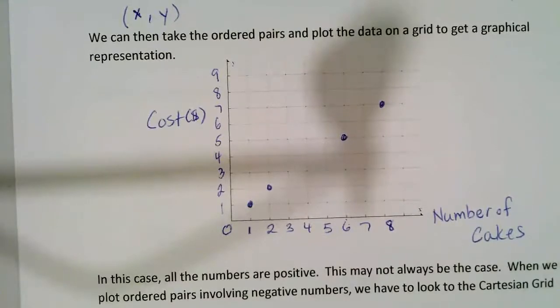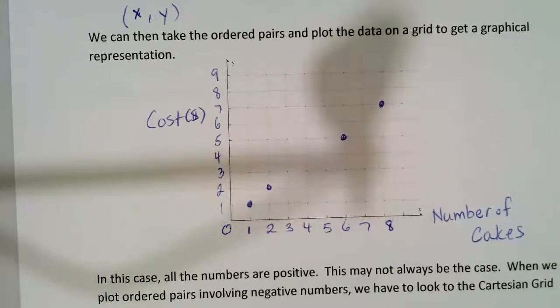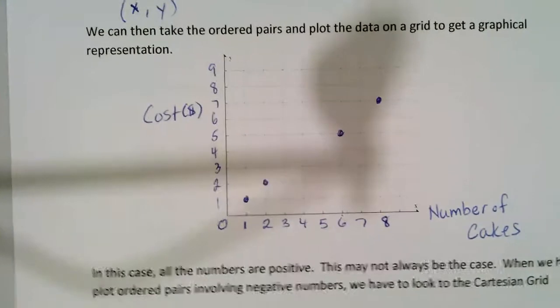Sometimes we're going to be working with ordered pairs that involve negative numbers. And in that case, we have to change the grid so that it looks like the Cartesian grid.